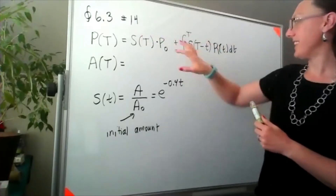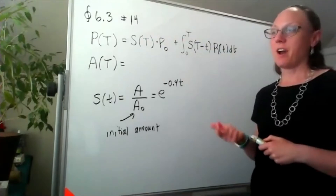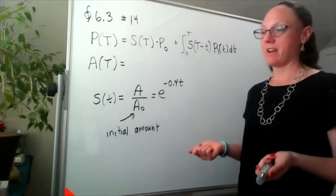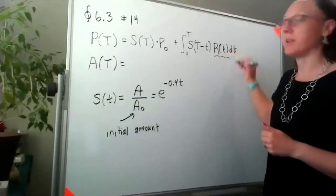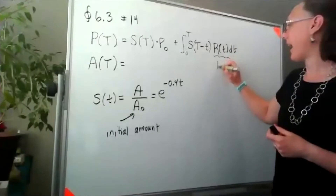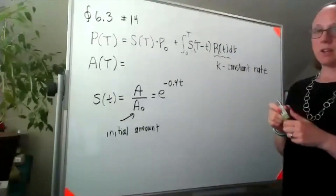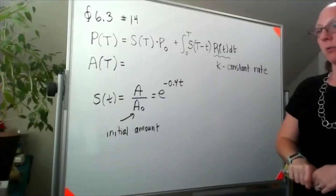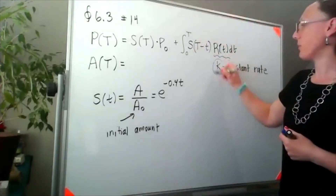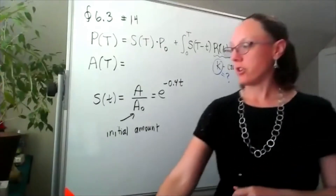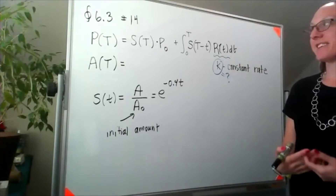Putting that into the formula, the other thing we need to know is the renewal rate. Because the drug is to be administered at a constant rate, we need to replace our rate with a constant — I'll call that K. We're being asked at what constant rate K should the drug be administered to maintain a steady level in the bloodstream.